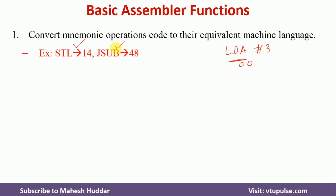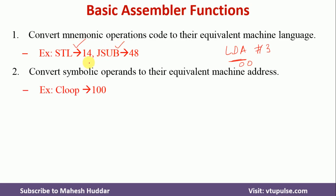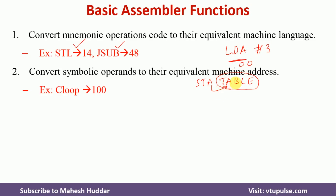The second function is that the assembler converts symbolic operands to their equivalent machine addresses. For example, the instruction STA TABLE means store whatever value is in the accumulator into TABLE. But TABLE is not an address — it is a symbolic operand. The assembler converts this symbolic operand into an actual address. For instance, CLOOP is a symbolic operand and its address is 1000.